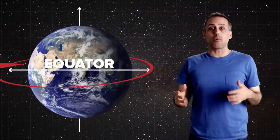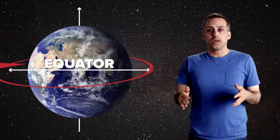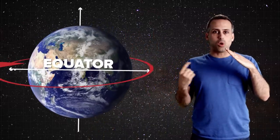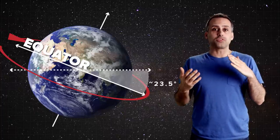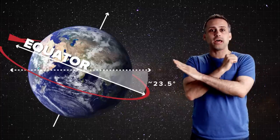Before we get into it, let's quickly recap why we have seasons in the first place. Earth's equator is tilted from the plane of its orbit by approximately 23 and a half degrees, so that different parts of the planet will receive more direct sunlight at different times of year.